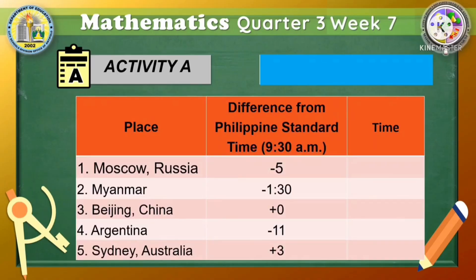All you need to do is subtract 4 hours from 9:30 AM. Now it's your turn to answer the 5-item test. I will give you 50 seconds to finish the task. Time starts now.